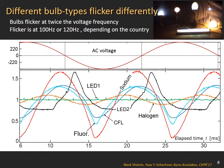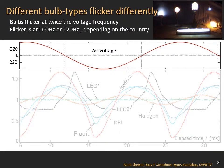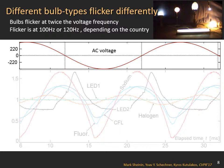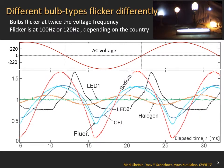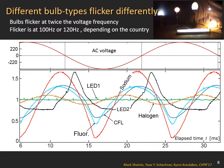Bulbs on the grid are powered by alternating current, namely AC. The top graph shows the AC voltage. The AC voltage periodically alternates at a frequency of 50 or 60 hertz depending on the country. Bulbs flicker at twice this frequency — that is 100 or 120 times each second.